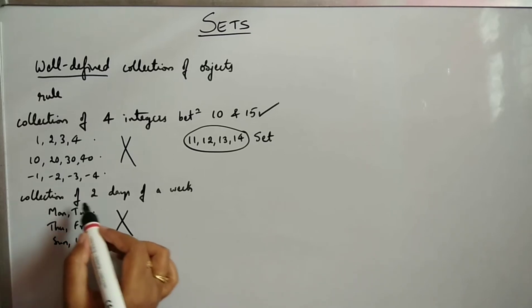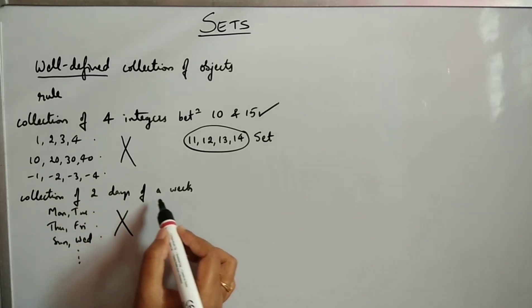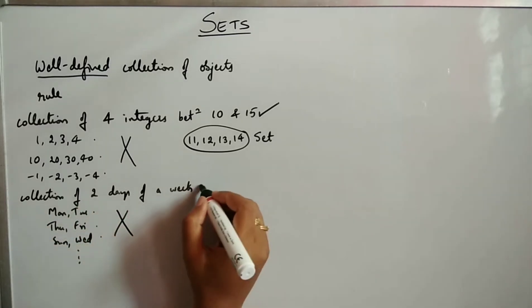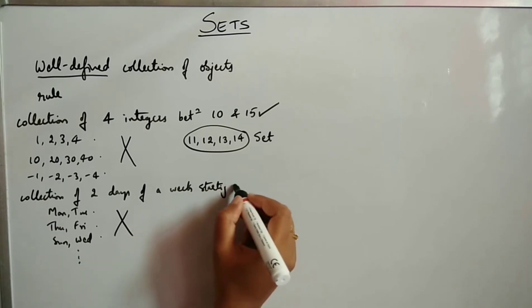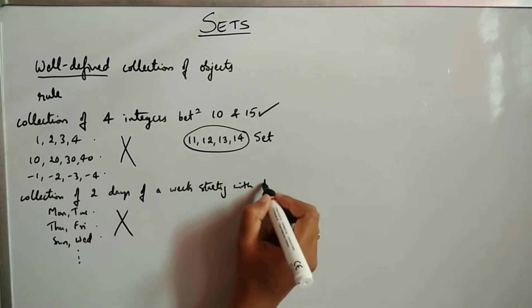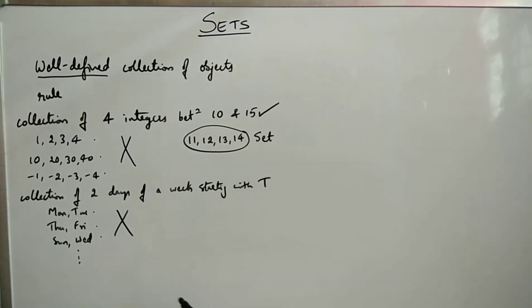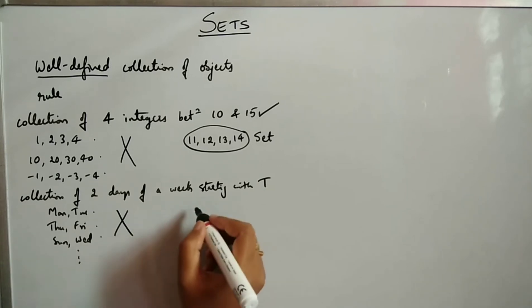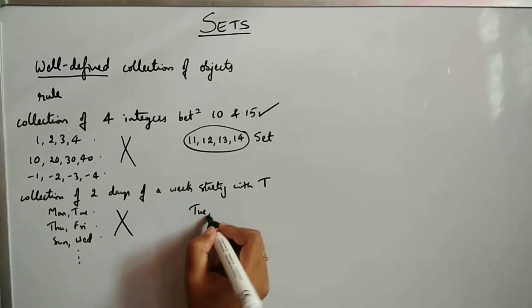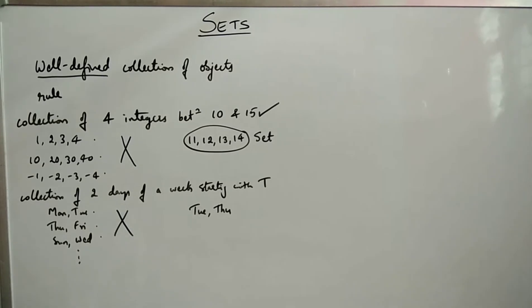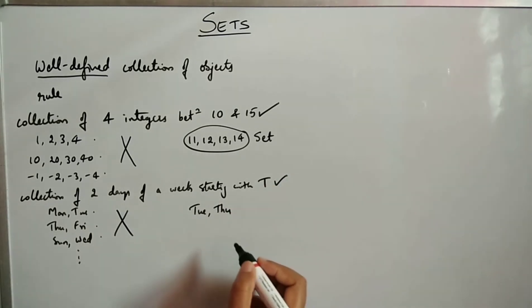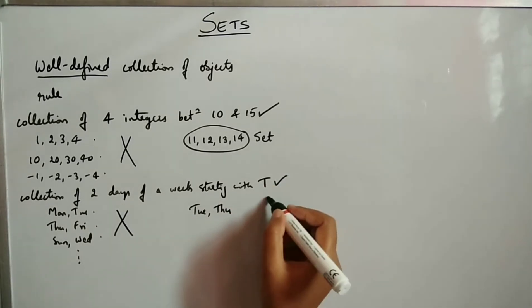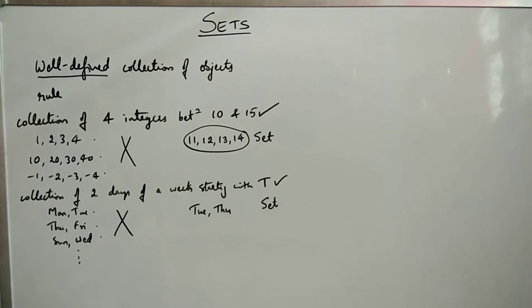Instead, if I say collection of 2 days of a week starting with the letter T, the only possible collection is Tuesday, Thursday. So this is a well-defined collection and we can call this collection a set.